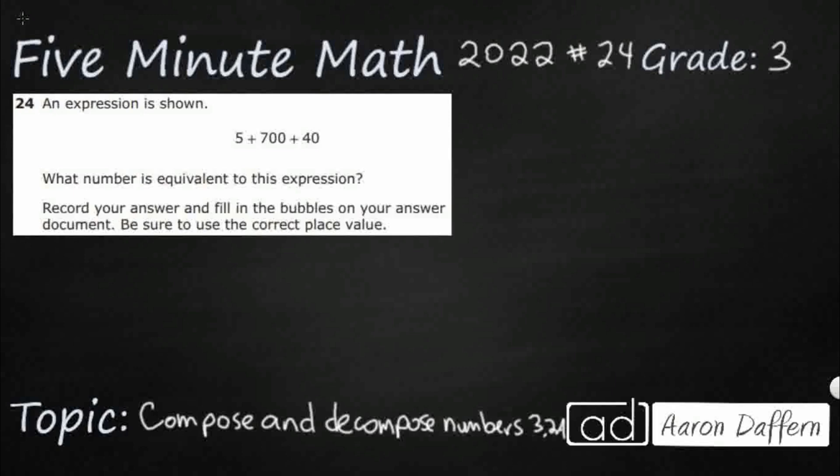We have this expression here. We need to find a number that is equivalent. We call this an expression simply because we don't have an equal sign. If we were to put an equal sign, we'd call it an equation. But either way, 5 plus 700 plus 40 equals something, and there's no F, G, H, or J to choose from, so we're going to have to bubble it in on the answer document.